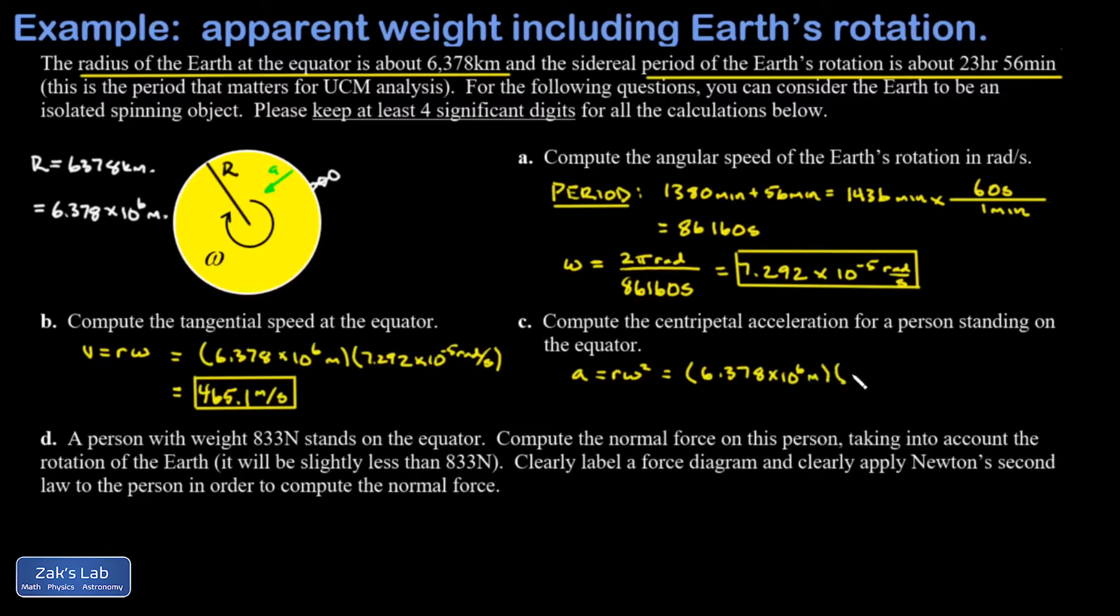I need to square that, and again radians are unitless, so I can see that I get units of meters per second squared. I get a centripetal acceleration that's rather small, and I'm going to leave it in expanded form but I'm still keeping four sig figs, so I get 0.03391 meters per second squared.